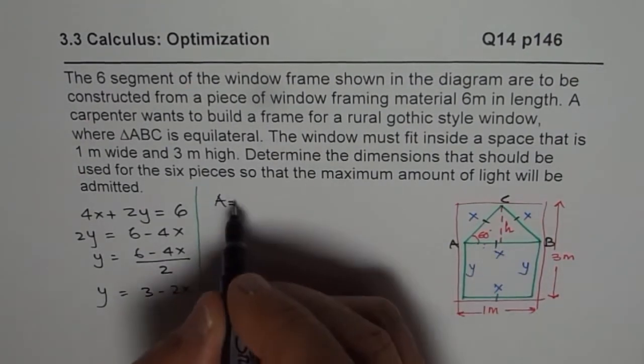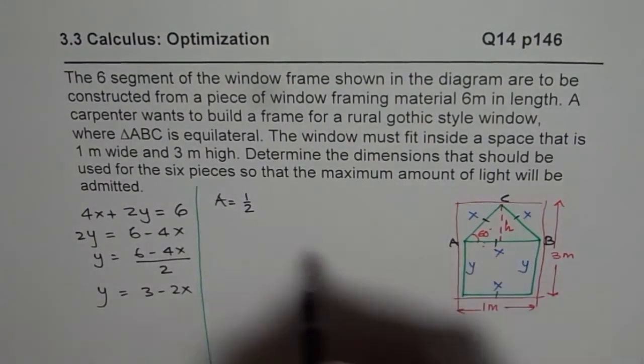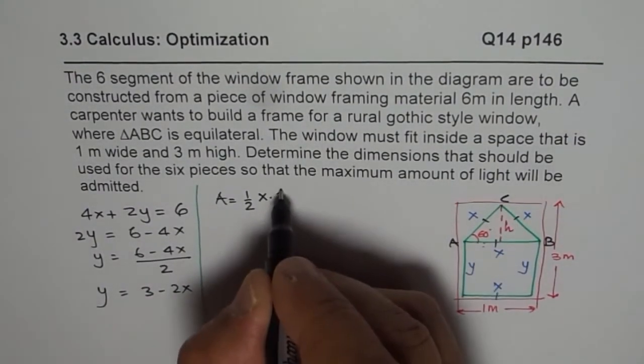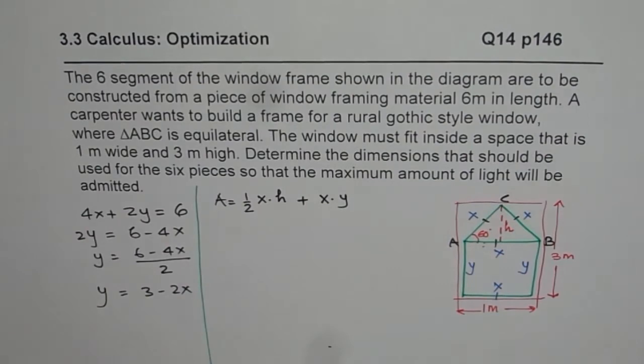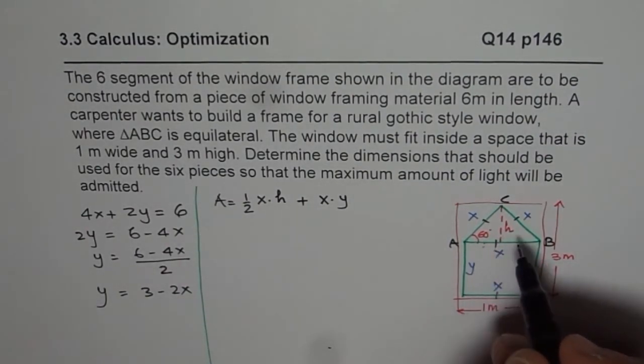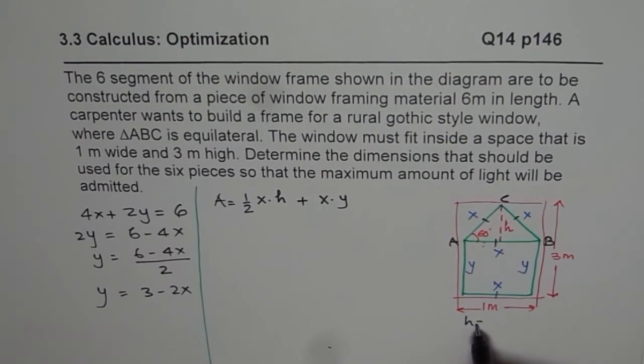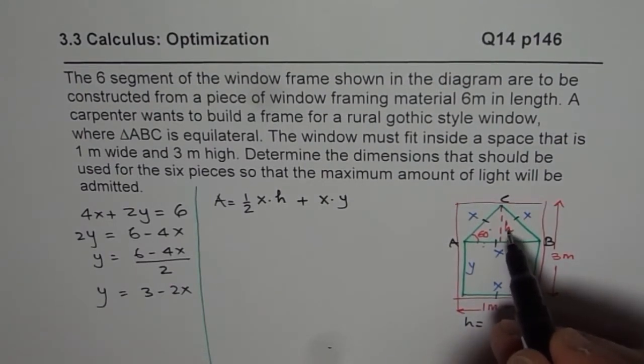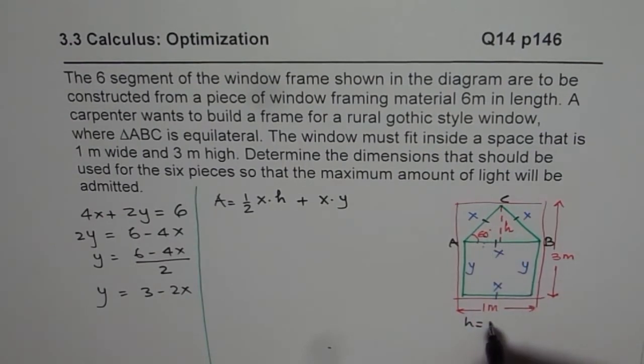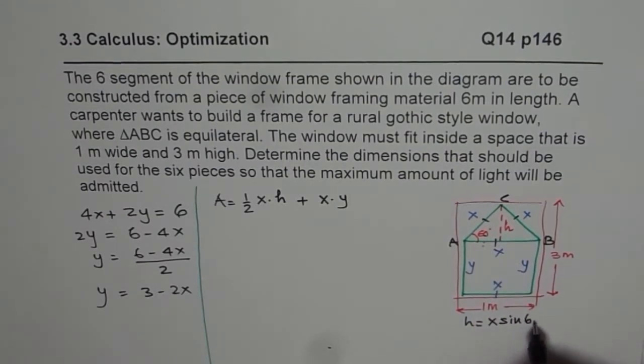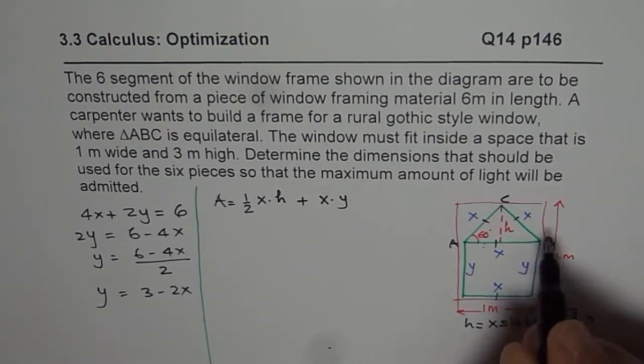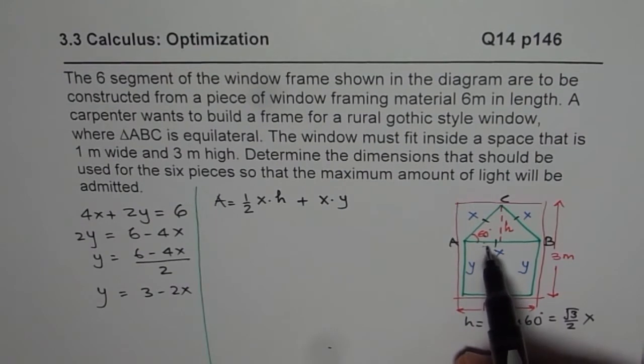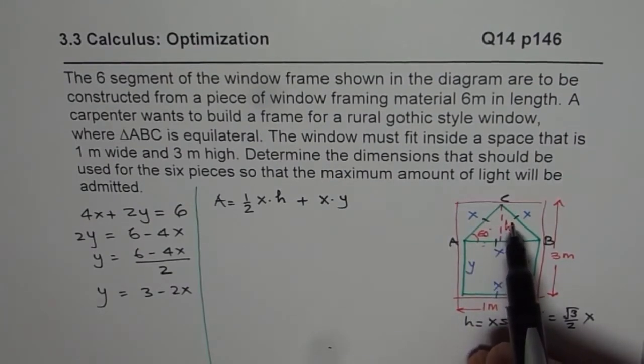So area of this triangle is half of base, which is x, times height, which is h, plus area of the rectangle, which is x times y. Now what is height equals to? We can use trigonometry to find height. So h equals to x sin 60, which is equals to x times square root 3 over 2. Sin of 60 is square root 3 over 2. You can use special triangles 30, 60, 90, in which the sides are 1, 2 and square root 3.